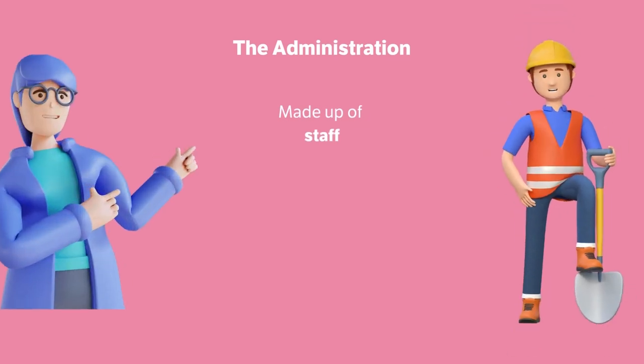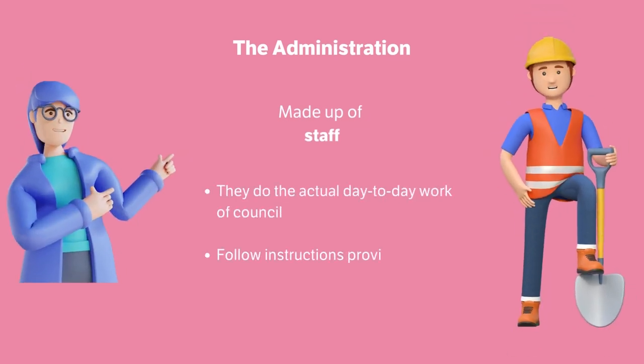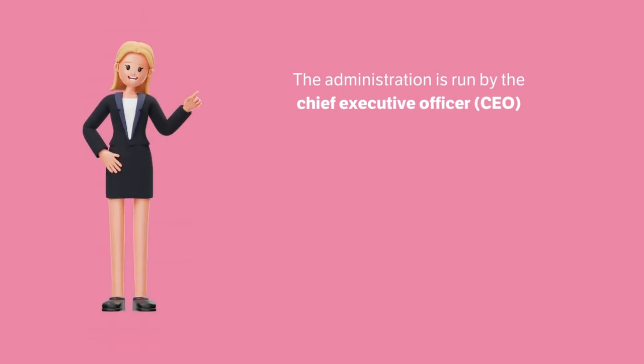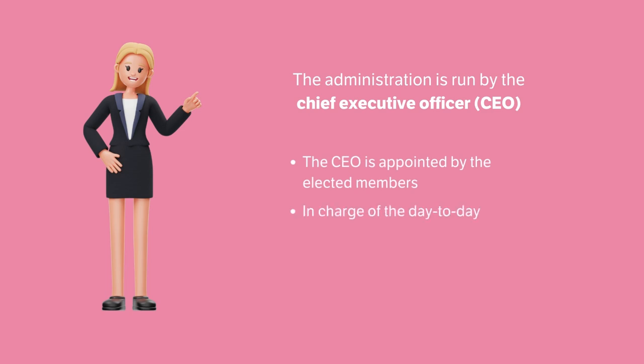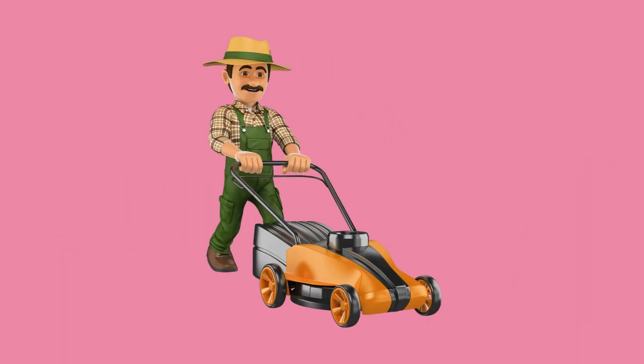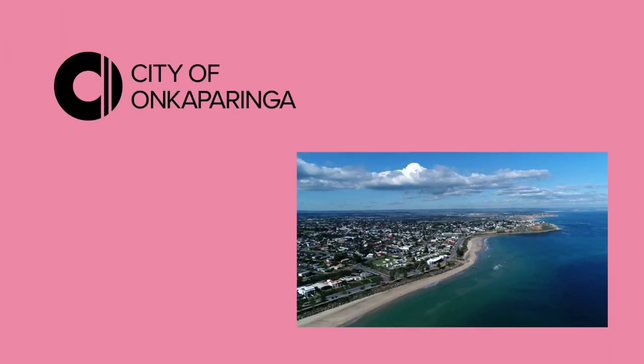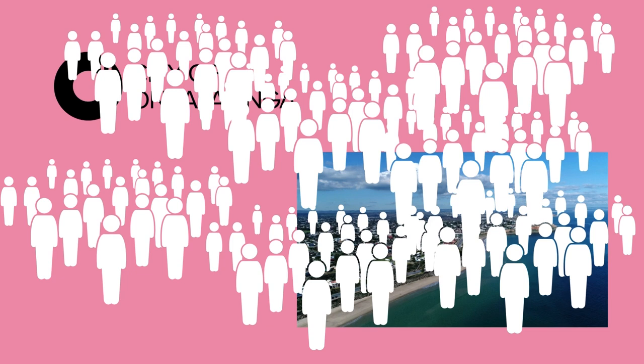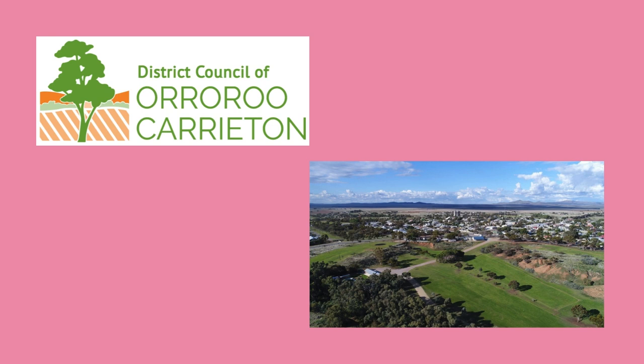The administration is made up of staff who do the actual day-to-day work of the council. Their job is to follow instructions provided by the elected members. The administration is run by the Chief Executive Officer of Council, or CEO. The CEO is picked by the elected members and is in charge of the day-to-day running of the council. The CEO appoints staff to help them and leads the organisational side of council. Think about all of the people needed to operate council buildings, design new play spaces, fix up roads, keep your sports ground well maintained and carry out all the instructions by the elected members — that's the administration staff's job. For example, the City of Onkaparinga in southern Adelaide is the largest council in SA by population and they have over 800 staff, while one of the smallest councils, the District Council of Oruru Carriton in the mid-north of the state, only has 15 staff members.